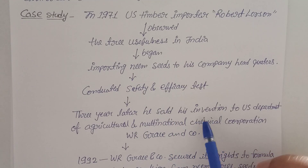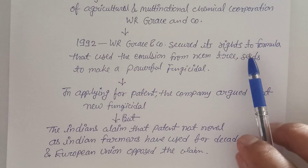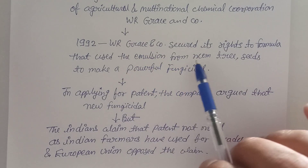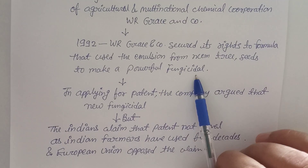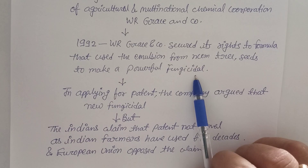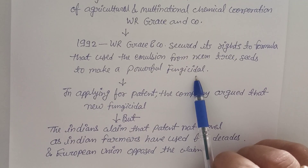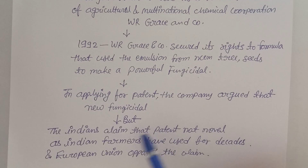He made a formulation and sold it in 1992. WR Grace and Co secured rights to a formula using an emulsion from neem tree seeds to make a powerful fungicidal product — a formulation that can kill fungus at different locations on the human body, in plant products, or other products.